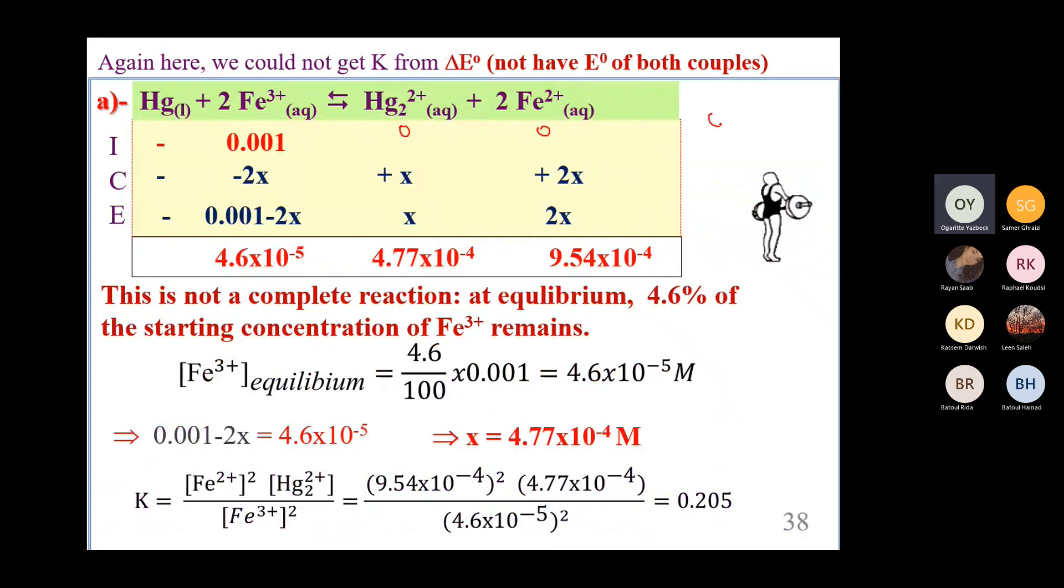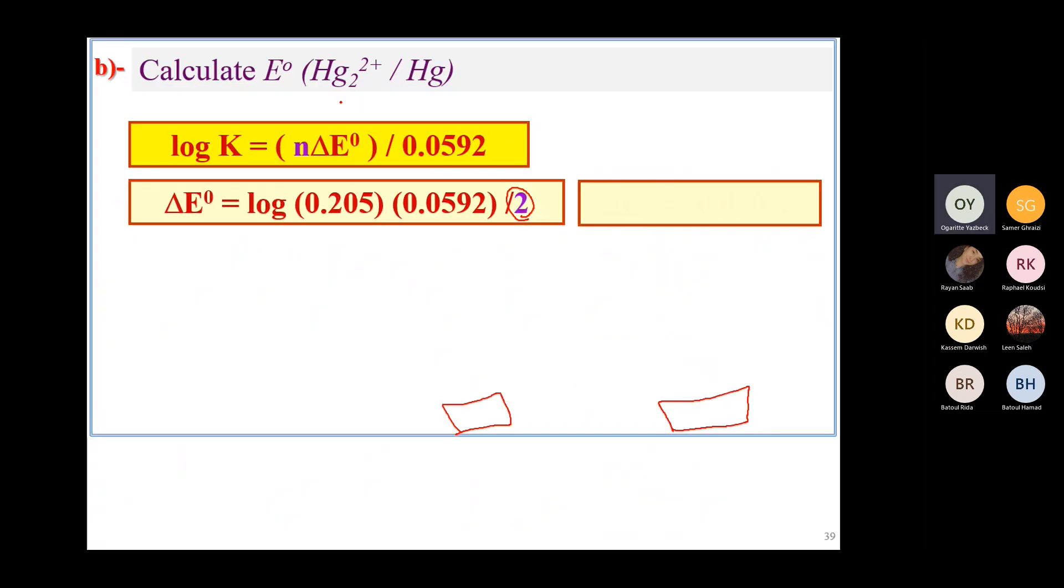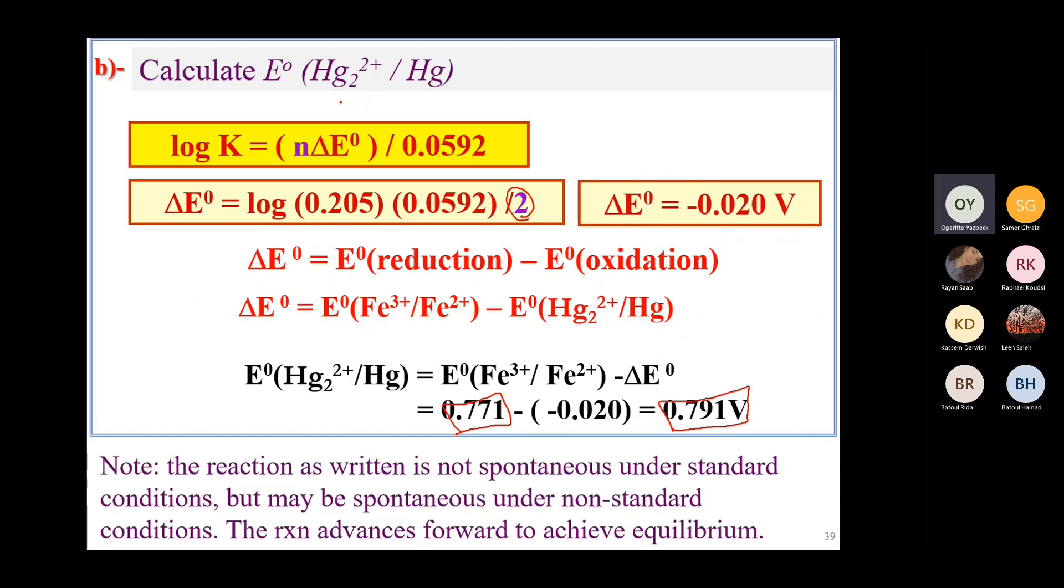So if you look at the Q, the Q is zero, no matter how, you know, what the K is, this Q is less than K, no matter, let's say 10⁻²⁰⁰, it's still some value greater than zero. No matter what the K is. So if you look at the Q is zero, it's going to advance in the forward direction.